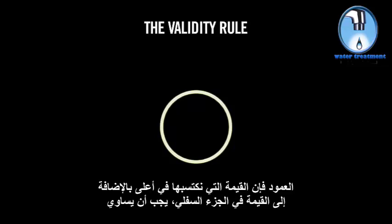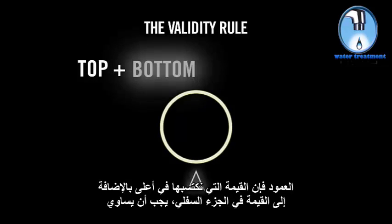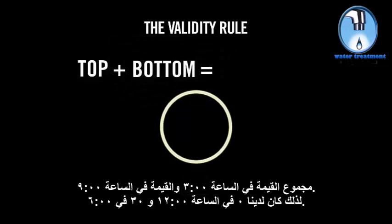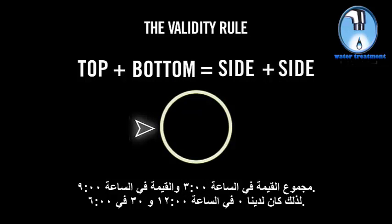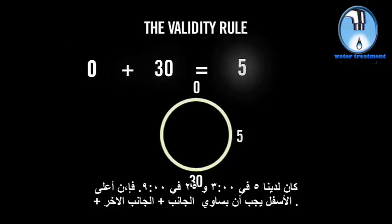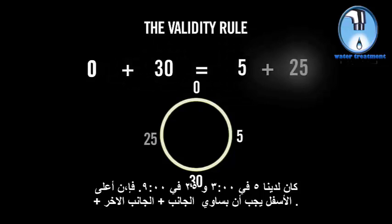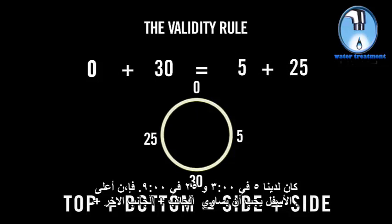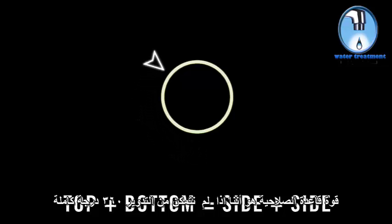The validity rule states that when we rotate the shafts, the value at the top plus the value at the bottom must equal the sum of the value at 3 o'clock and the value at 9 o'clock. So we had 0 at 12 o'clock and 30 at 6 o'clock, and 5 at 3 o'clock and 25 at 9 o'clock — top plus bottom must equal side plus side. The power of the validity rule is that we don't have to rotate a full 360 degrees to get accurate alignment information.